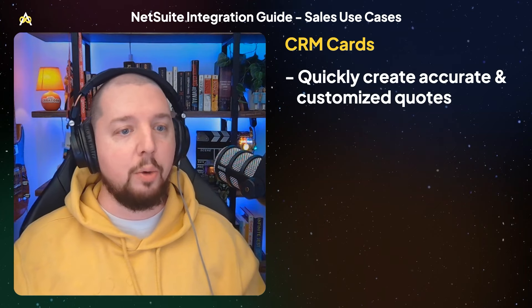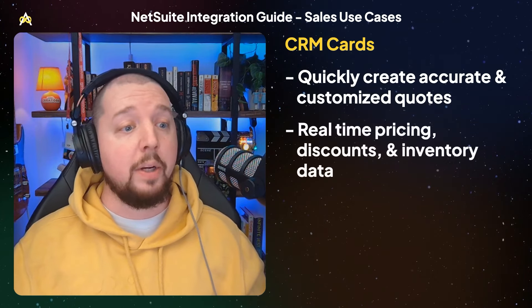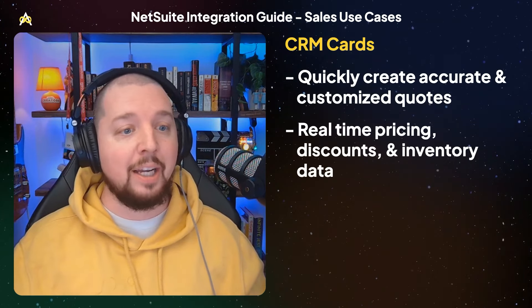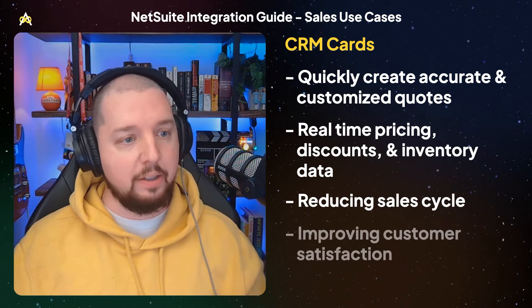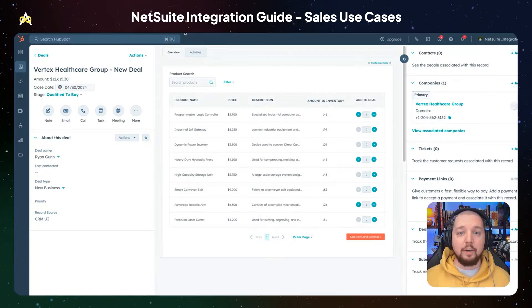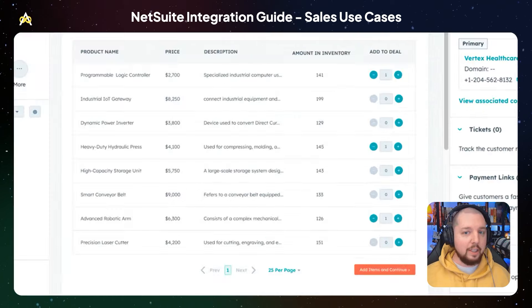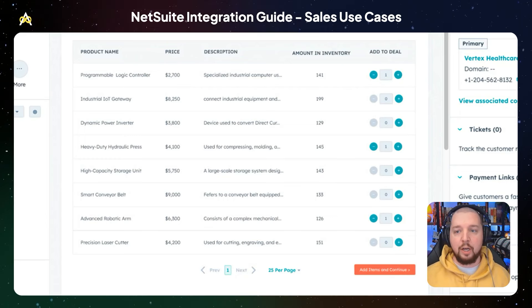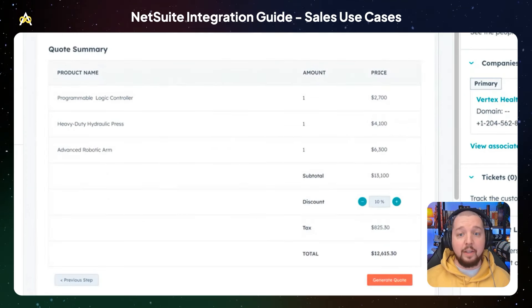A CRM card is going to allow your sales team to quickly create accurate and customized quotes based on real-time pricing, discounts, and inventory data, reducing the sales cycle and improving customer satisfaction. Here we have a custom CRM card pulling data from NetSuite. You can see the different products listed, the current price, a description, and the amount currently in inventory. You can add them to the deal, see the current quote, apply a discount, and then generate a HubSpot quote by pushing the button at the bottom.